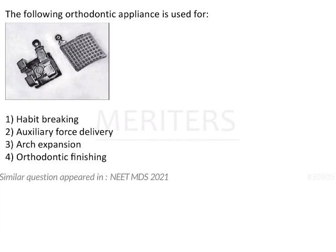We can identify from the image that this is a metallic bracket which is used in fixed appliances. It's a component of a fixed appliance. Fixed appliances have two types of components: passive components and active components.